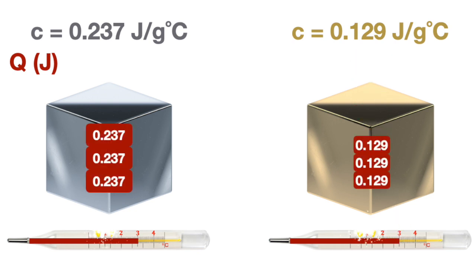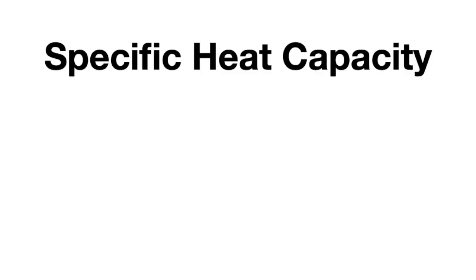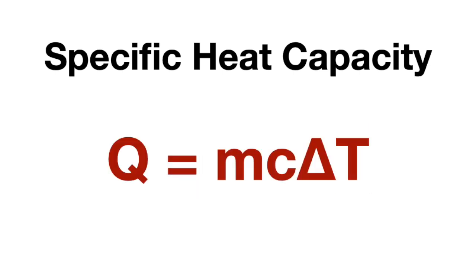Notice both are at 3 degrees Celsius, but the silver had to absorb a lot more energy than the gold did in order to increase the same number of degrees. Using the heat capacity formula, we can see that when two substances of the same mass increase by the same number of degrees Celsius, the substance with the higher specific heat will have to absorb more heat energy. This means specific heat and internal energy are directly related.